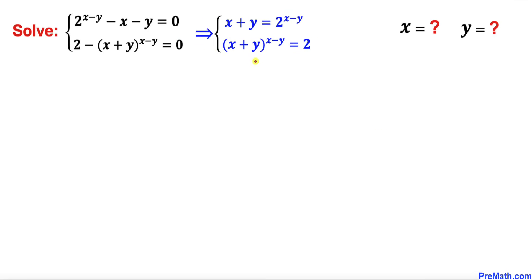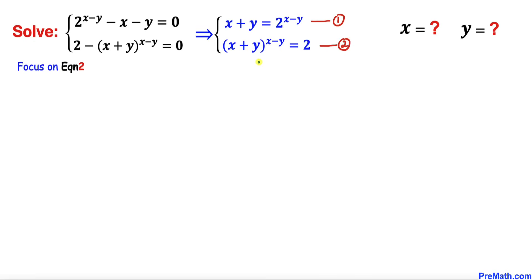Now we can see that our new system of equations is well organized. Let me call the first equation — x + y = 2^(x−y) — equation number one, and the second — (x+y)^(x−y) = 2 — equation number two.